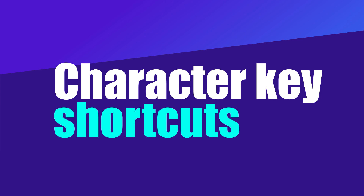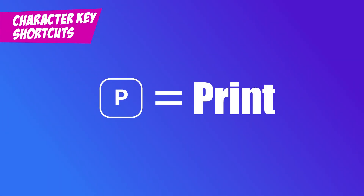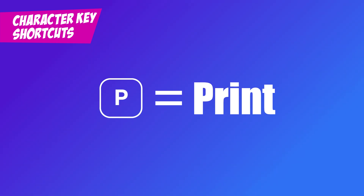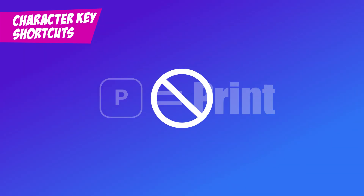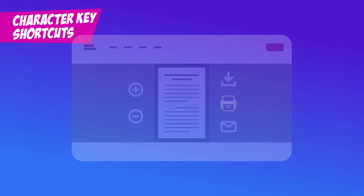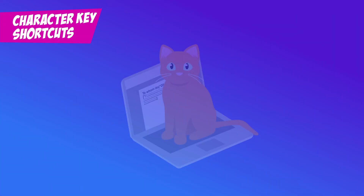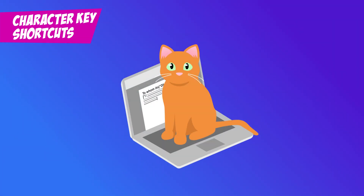Character key shortcuts. If a website uses keyboard shortcuts that involve letter, number, or symbol characters, like pressing P to print, there should be a way to either turn them off, remap them to include a non-character key like Control or Alt, or only have them active when that part of the page is focused. This is important because it prevents accidental activation of shortcuts, especially when a user is typing.